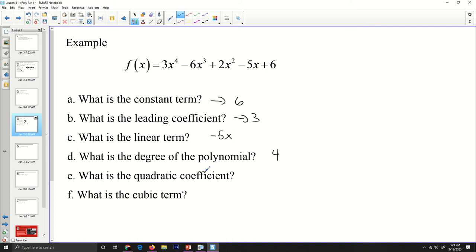What is the quadratic coefficient? The quadratic term is 2x^2. Its coefficient is just 2. What is the cubic term? The cubic term is the term that is to the third power. So the cubic term is -6x^3. Alright.